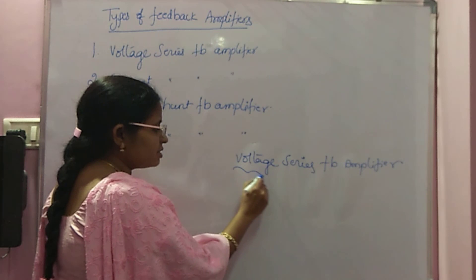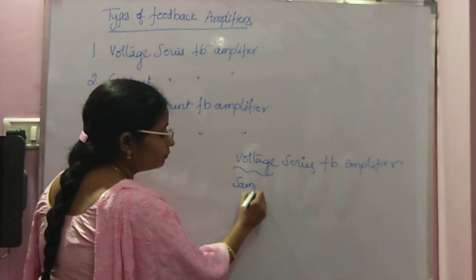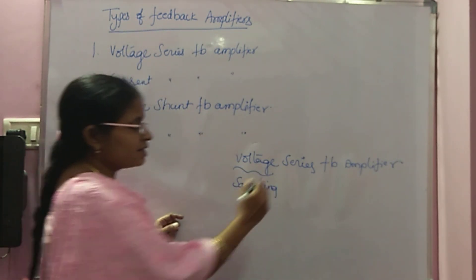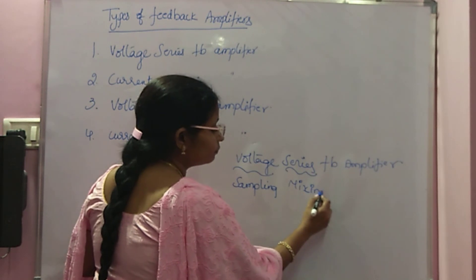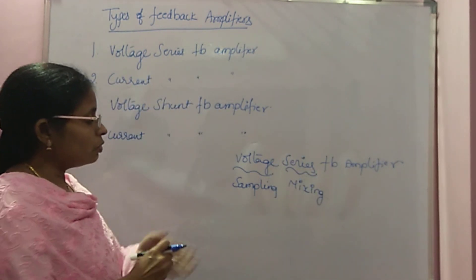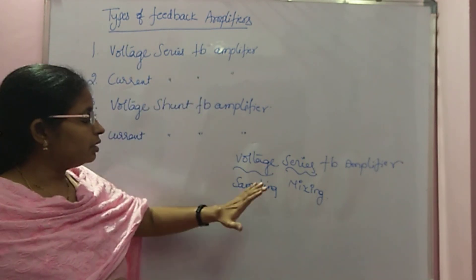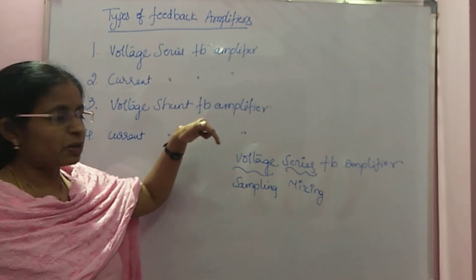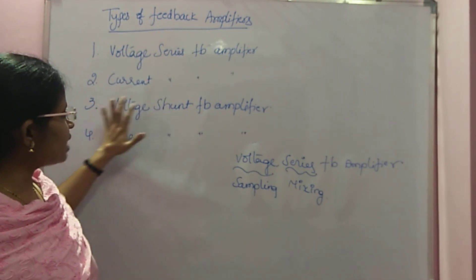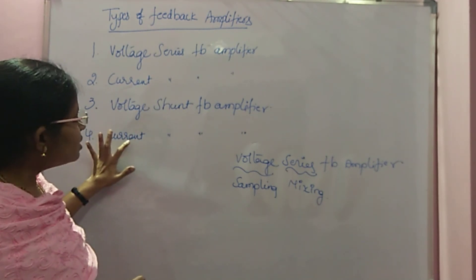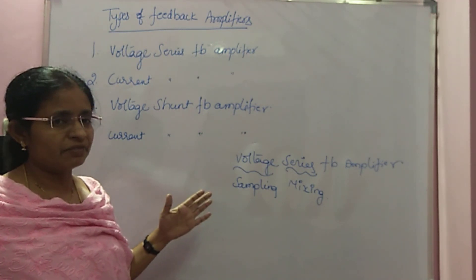If you take, for example, voltage series — the first term indicates the sampling and the second term indicates the mixing. So voltage series feedback amplifier means the sampling is voltage and the mixing is series mixing. Likewise: current sampling series mixing, voltage sampling shunt mixing, current sampling shunt mixing. These are the various types of feedback amplifiers.